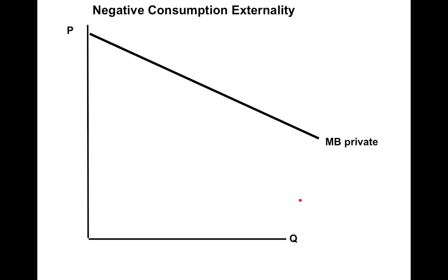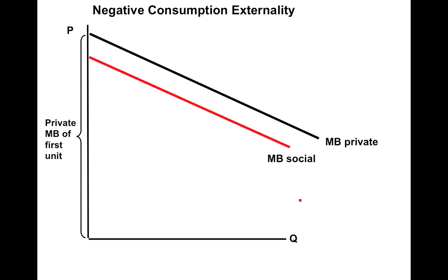From a purely analytical standpoint, what we're going to use is the divergence between the marginal benefit of consumption from a private standpoint and the social marginal benefit, which is going to be less. The demand curve for the product reflects the marginal benefit of consumption for domestic consumers, while the social marginal benefit is lower — that vertical distance between the two is the marginal consumption externality.